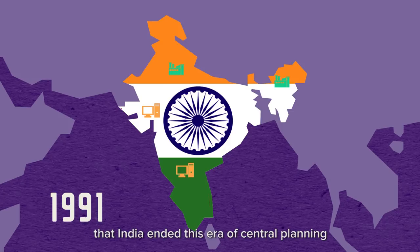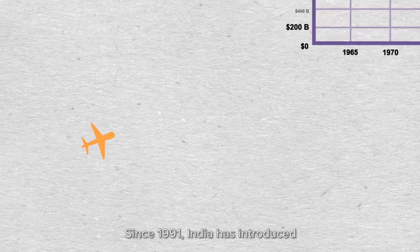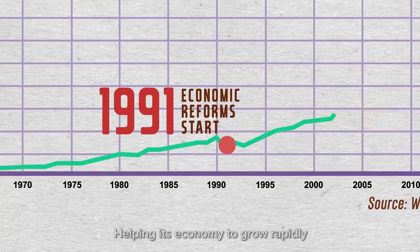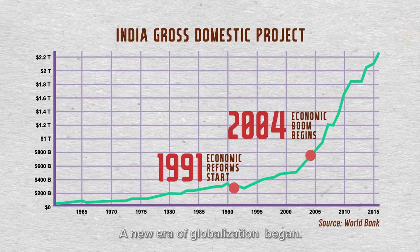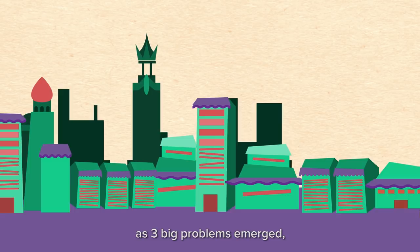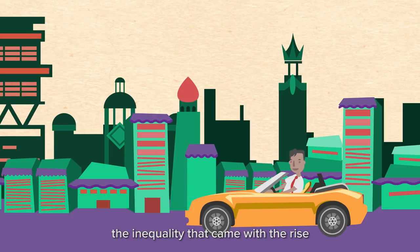India reopened itself to the world. Since 1991, India has introduced a range of economic reforms, helping its economy to grow rapidly and lifting hundreds of millions out of poverty. A new era of globalization began, but India's boom came at a cost as three big problems emerged — the first being the inequality that came with the rise of a new super rich class.